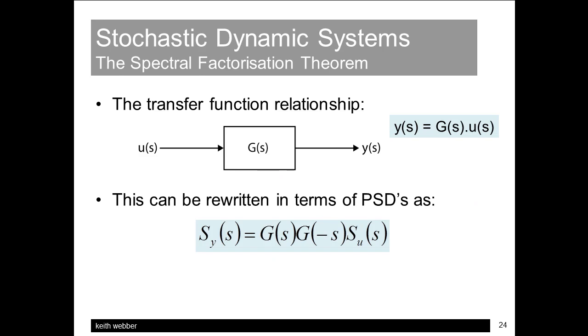But this slide shows what happens from a transfer function point of view if we use stochastic measures of power spectral density instead of time signals for the input and output. The result is the basis of the spectral factorisation theorem, where the square form arises from taking the transform of the correlation term, the expected value of yt times yt plus tau, where the signal is multiplied by itself.